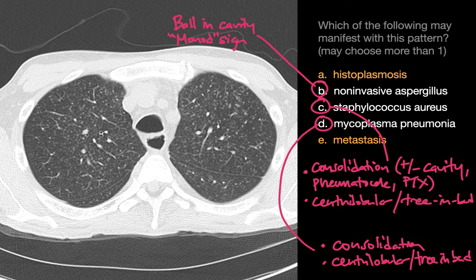Non-invasive aspergillosis should not manifest like this — it should usually manifest as a monod sign, a ball in the cavity. Staph and mycoplasma infections can manifest as either centrilobular or tree-and-bud nodular interstitial patterns, or consolidation. Consolidation in cases of staph can potentially cavitate, and you might see additional complications in the setting of a cavitating consolidation.